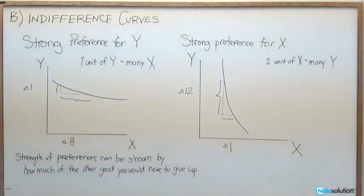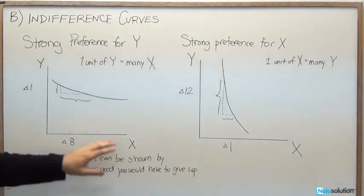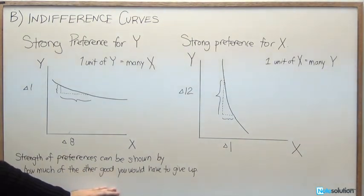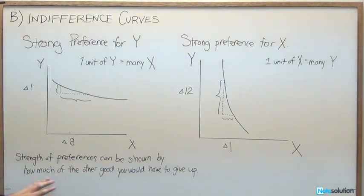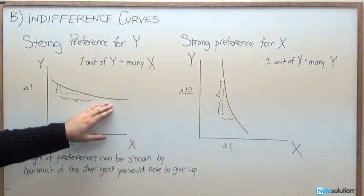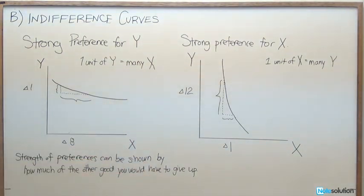So how exactly does that work? The strength of preferences can be shown by how much of the other good you would have to give up, and that's true in both cases. The strength of preferences can be shown by the opportunity cost, which relates directly to how much of the other good we would have to give up to remain on the same indifference curve.